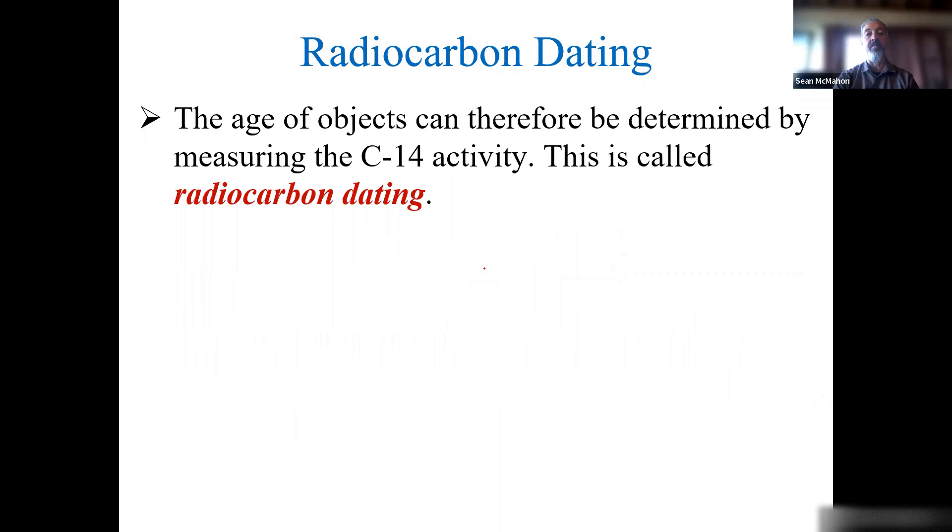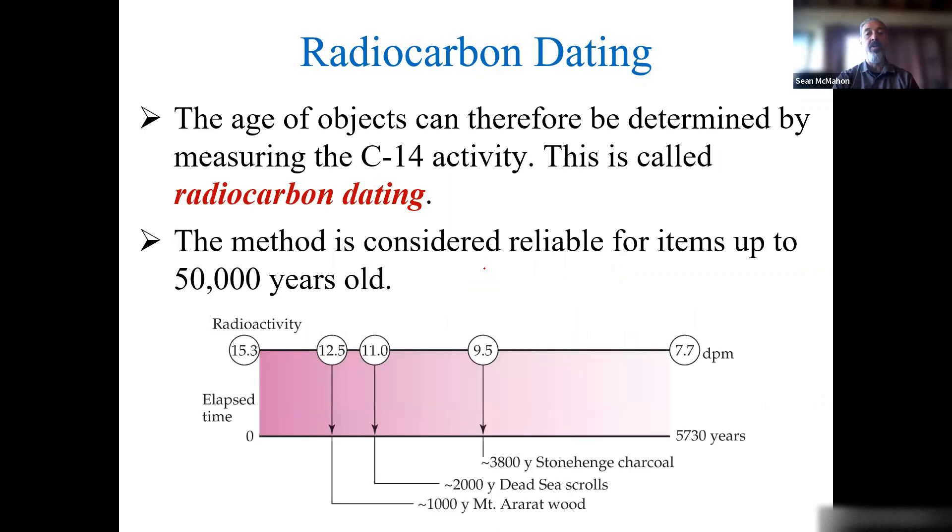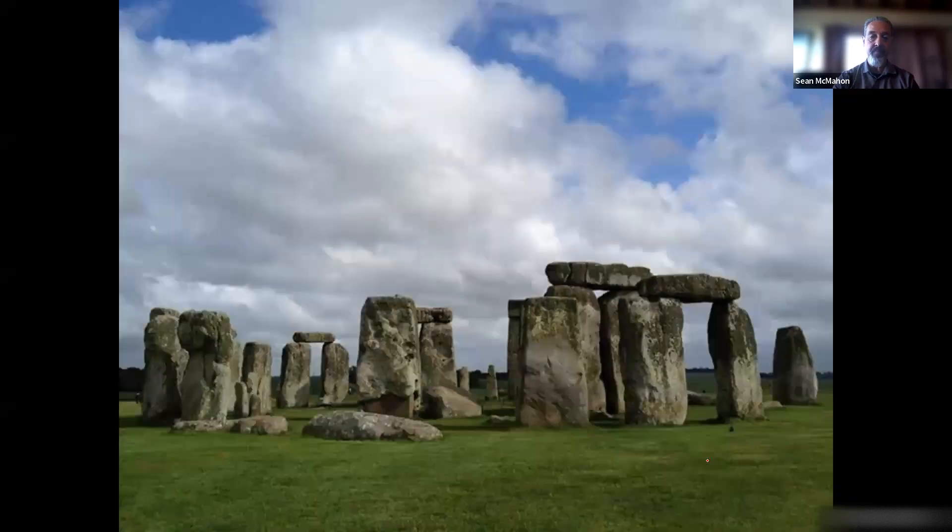The amount of carbon-14 in living organisms stays constant with an activity of about 15.3 disintegrations per minute. After the plant or animal dies, the amount of carbon-14 begins to decrease. The age of objects can be determined by measuring carbon-14 activity. The method is pretty reliable for 10 to maybe 100,000 years because of the half-life's age. You might have 15.3 disintegrations per minute and would end up having 12.5 disintegrations per minute when you're about 1,000 years old, 11 disintegrations per minute when you're roughly 2,000, 9.5 at 3,800—that's how old Stonehenge is. Based on this ratio of disintegrations per minute, we can tell how old an object is.